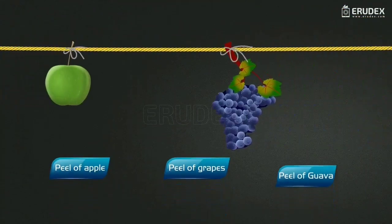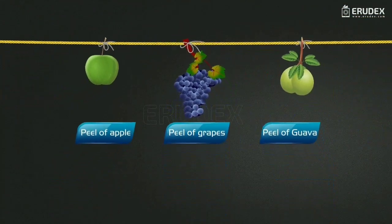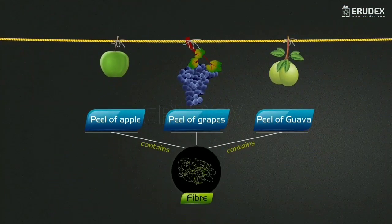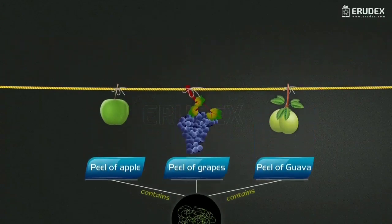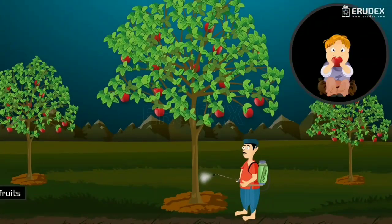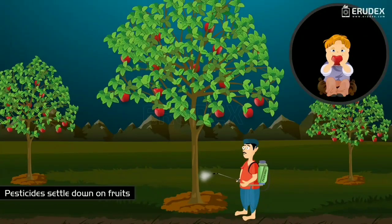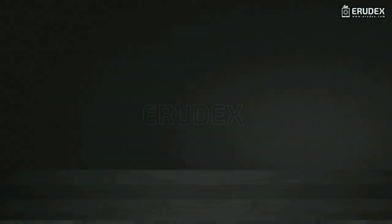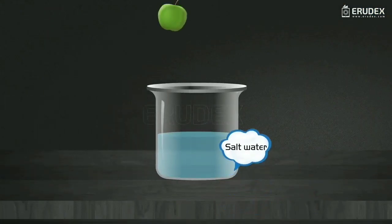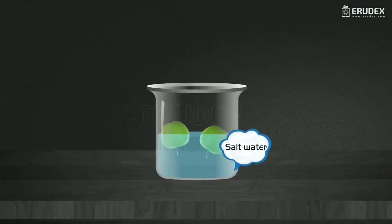Remember that the peels of many fruits contain rich fiber, so we should not remove them. However, one should be very careful while eating fruits with peels, as pesticides sprayed on fruit crops settle on them and are very dangerous. Fruits should be washed in salt water before eating.